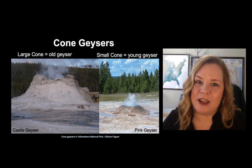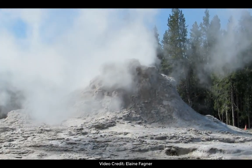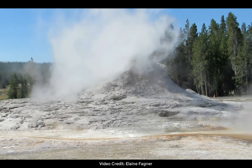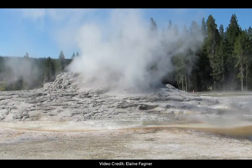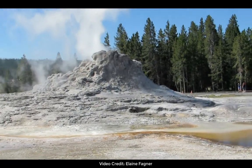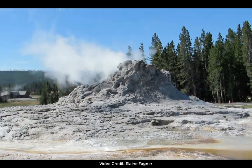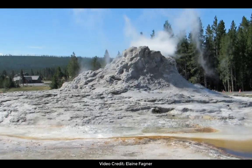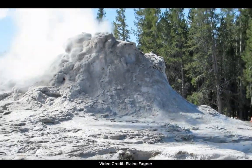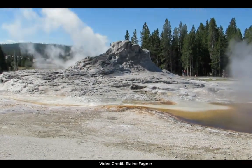This is a cone geyser in Yellowstone National Park having sporadic eruptions. You can see it is releasing geothermal energy, very common for any hydrothermal feature. Notice the size of the cone indicates this is an older cone or one that has received more frequent eruptions.